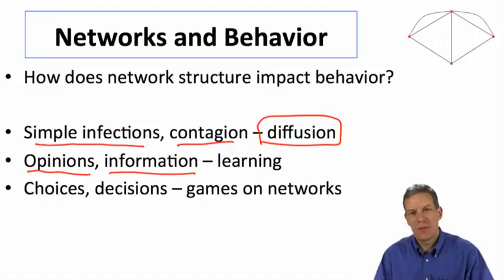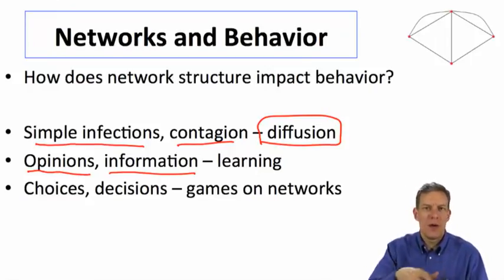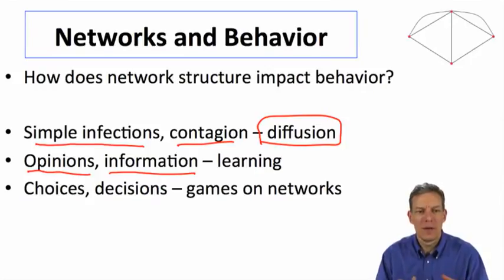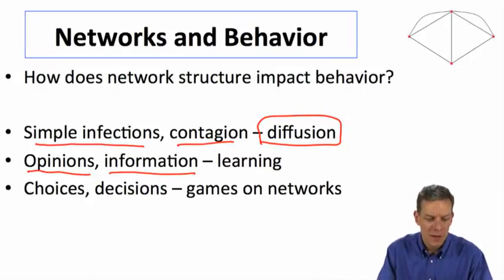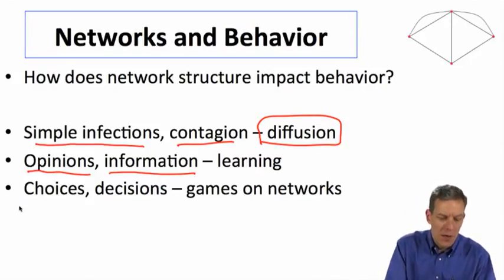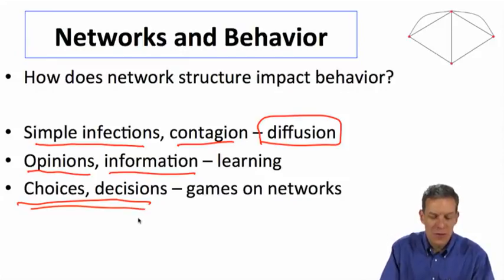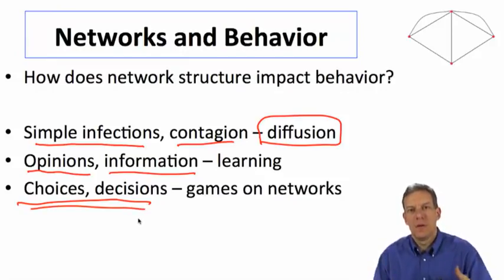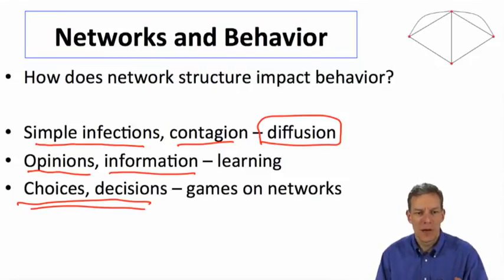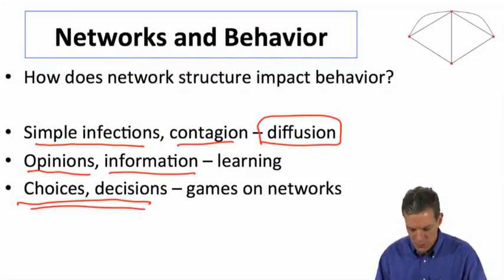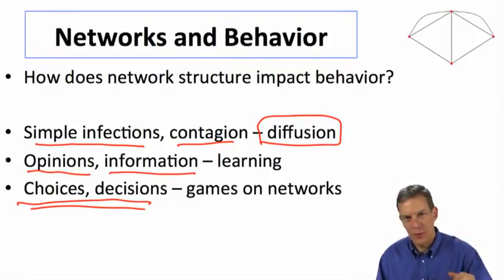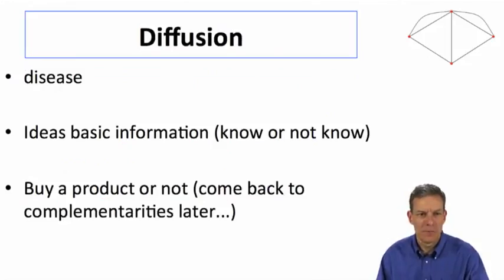In richer settings we actually have to think about how people process information, how information flows, what happens in forming opinions, and so forth. That gets more complicated. And when we allow people to make choices and decisions, that further complicates things — they have to think about what other people are doing and how they react to that. So things will get increasingly rich in terms of what we're allowing people to do and what kinds of processing is going on.